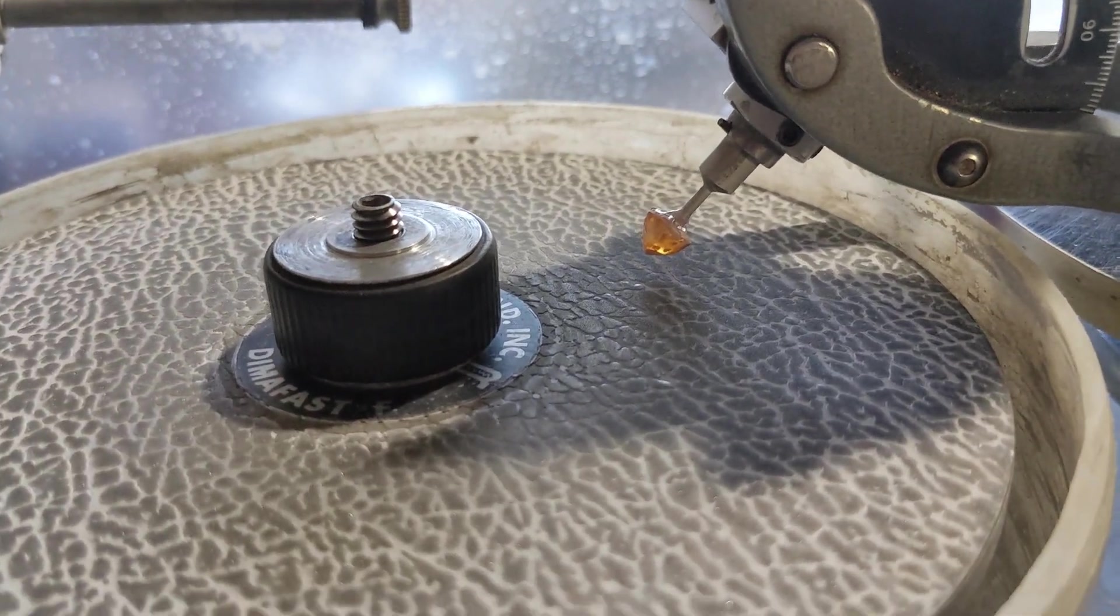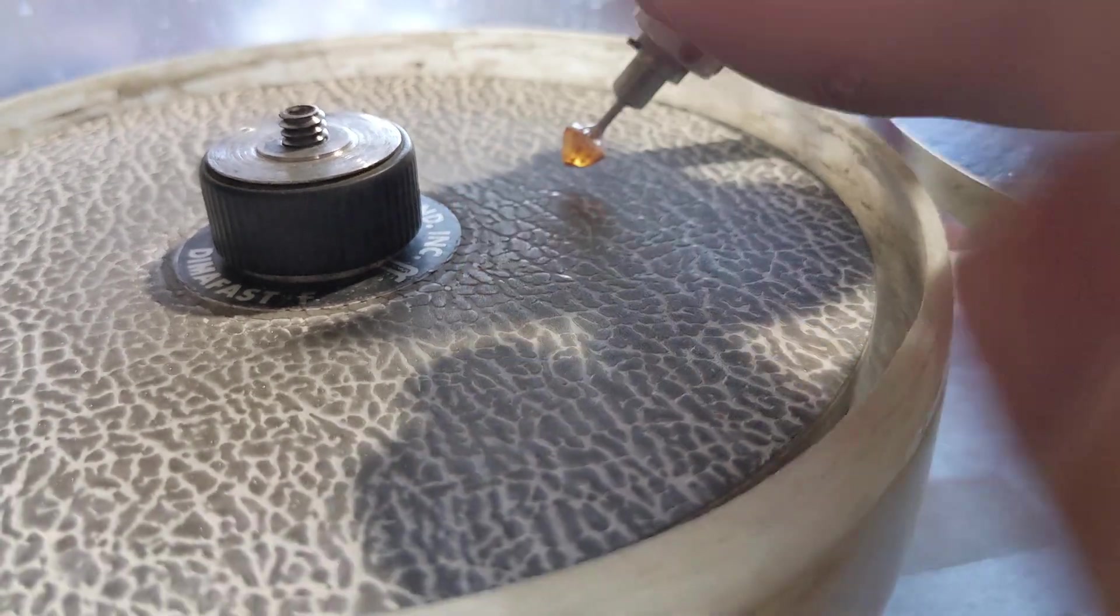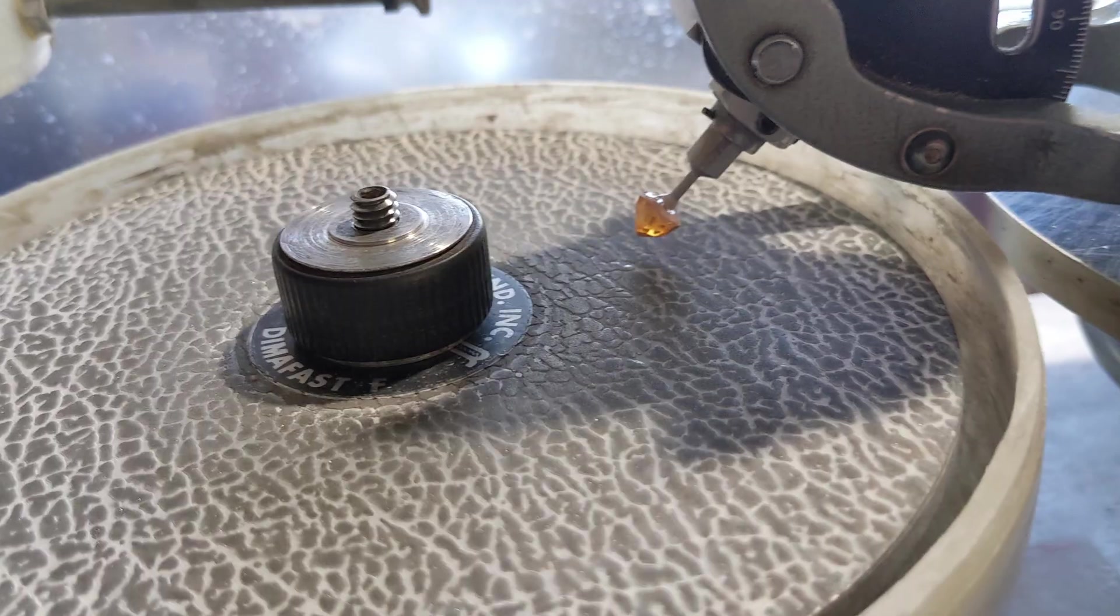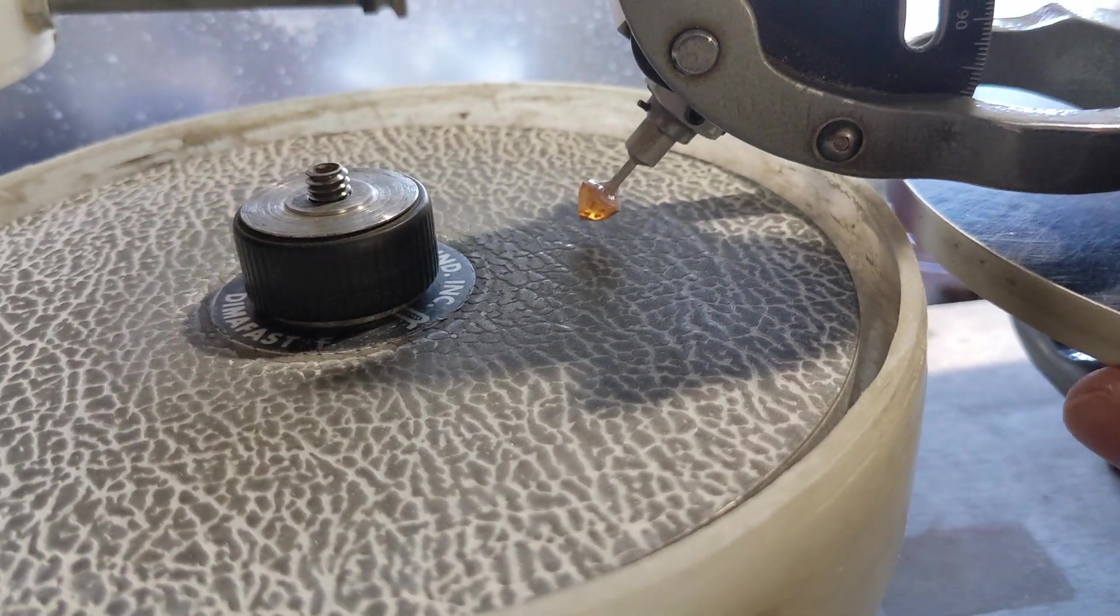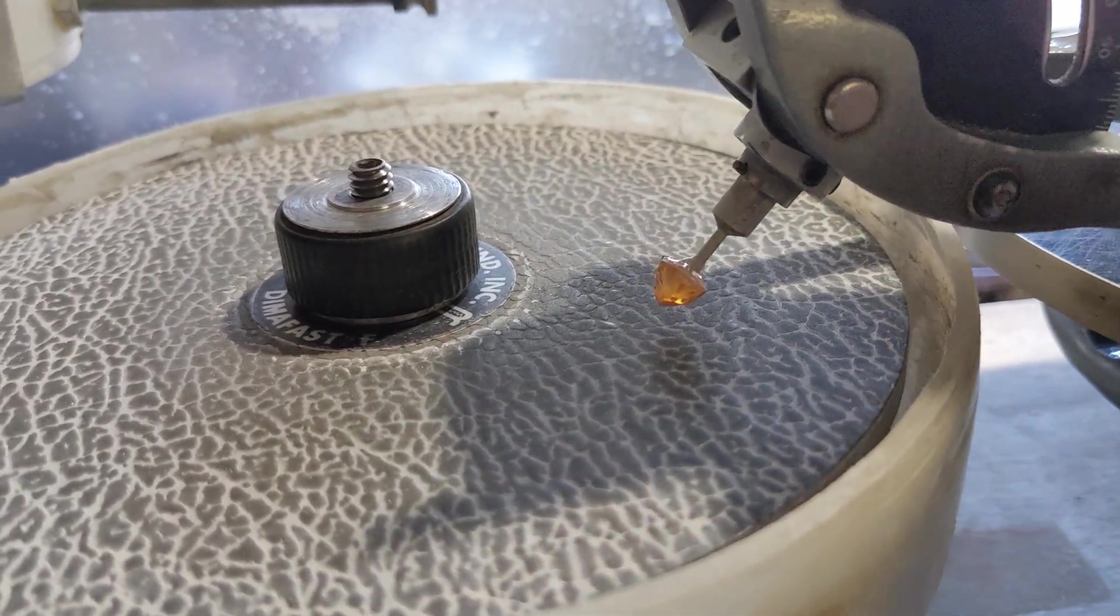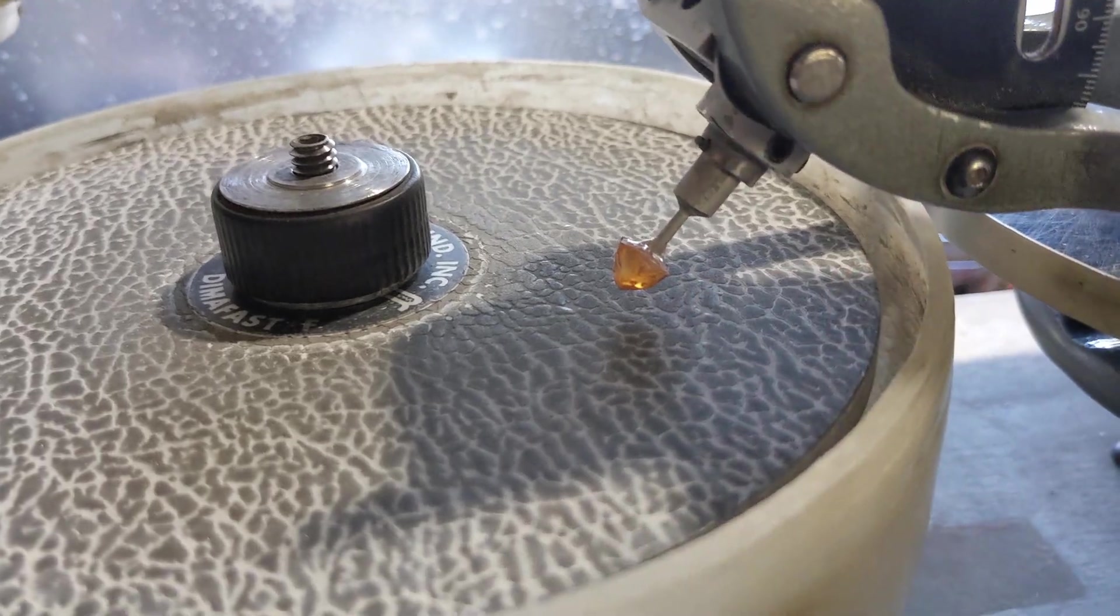I really should probably just do a rose cut where it's just basically a faceted dome on the top. I don't know, I kind of want to try it in a faceted design, see how it looks. And I've still got some matrix to cut away and all that.